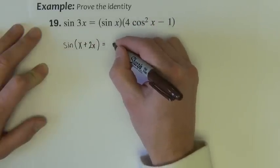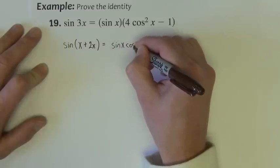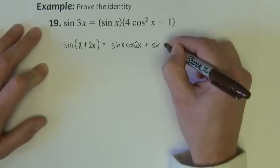The sum formula for sine then is sine of the first, cosine of the second, plus sine of the second, cosine of the first.